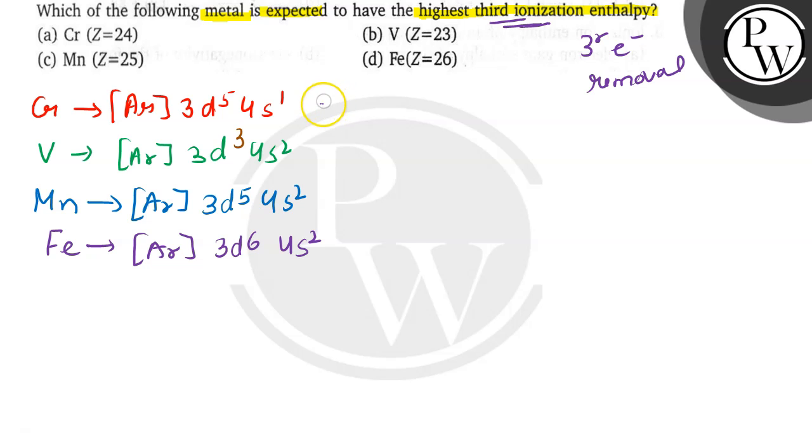So here in Cr, the third electron will be removed from the electronic configuration of 3d4. And if we talk about V, the third electron will be removed from the electronic configuration of 3d3.